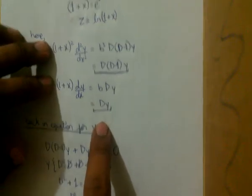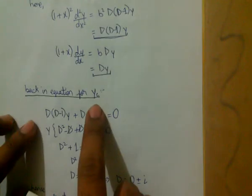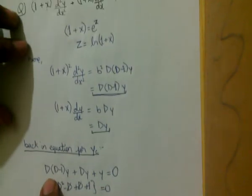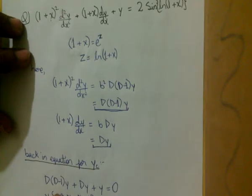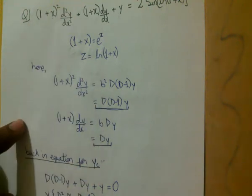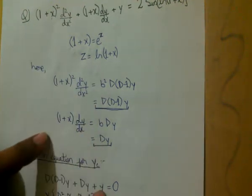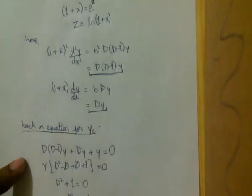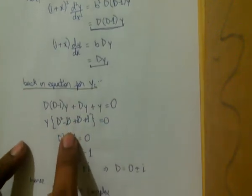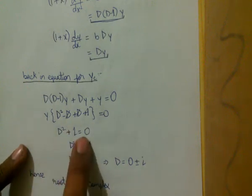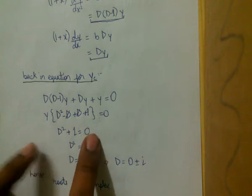Putting these terms back into the equation for yc: D(D−1)y + D(D−1)y + Dy + y = 0. By simplifying and taking y as common, we arrive at (D² + 1) = 0.